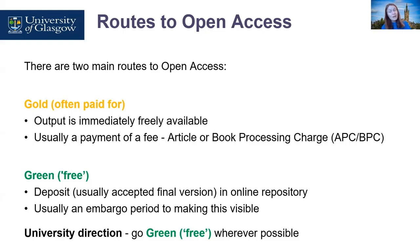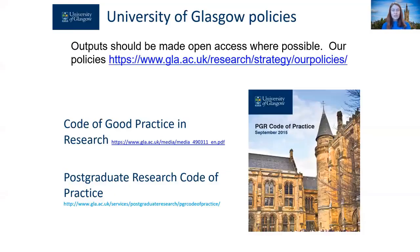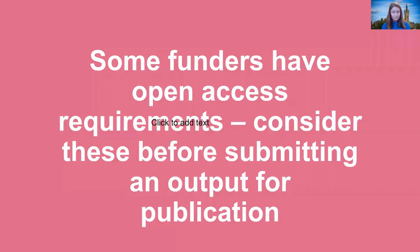Before you submit a manuscript, you need to think about what is appropriate and how any mandatory costs will be covered. The main sources of open access requirements are the university, funders, and the Research Excellence Framework exercise. There's some good guidance in the university policy documents and we recommend that you read them. The University of Glasgow's approach is that outputs should be made open access wherever possible.